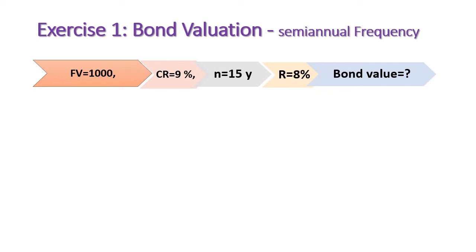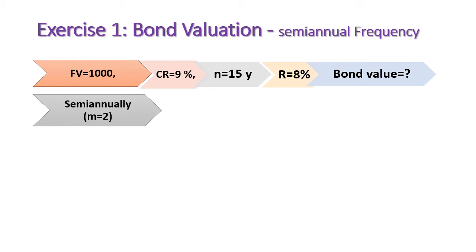In this case of semi-annual coupon payments, m equals two, meaning the bondholder will receive coupon payments every six months — twice per year. So we adjust the annual interest rate to a semi-annual rate by dividing 9 by 2, giving 4.5%. Investors will therefore receive coupon payments calculated at a coupon interest rate of 4.5%.